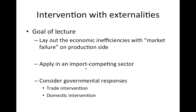We'll be looking at government intervention when there is a market imperfection — a market failure. The three goals: first, to lay out what we mean by economic inefficiencies when there's a market failure, particularly on the production side in the import competing sector; and second, to look at potential government responses: a trade intervention — specifically a tariff — and a domestic intervention, which is a production subsidy.